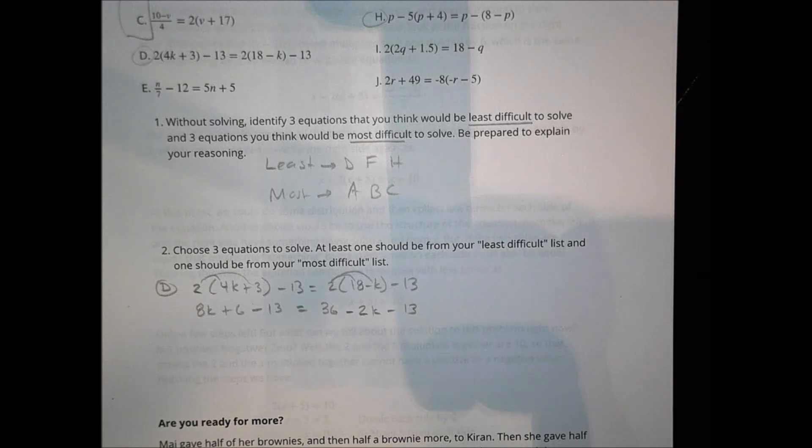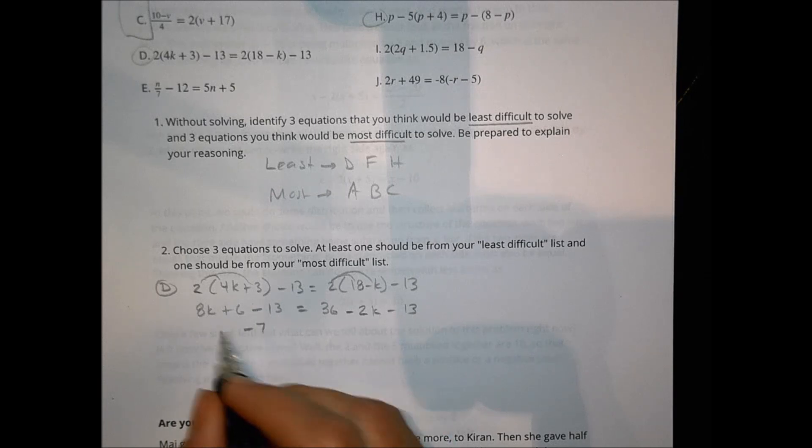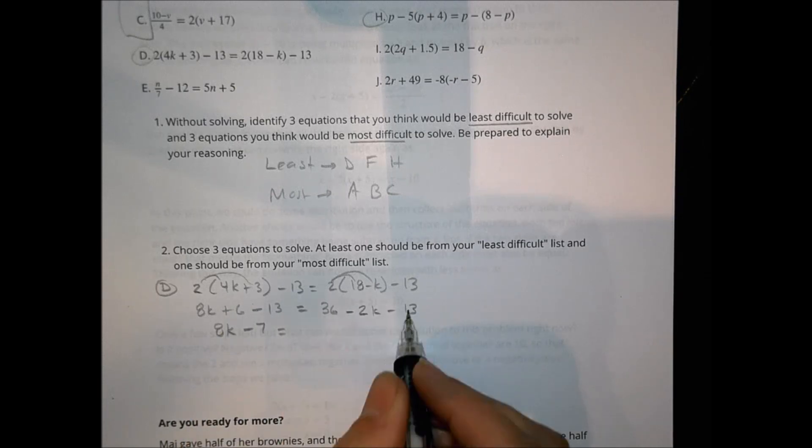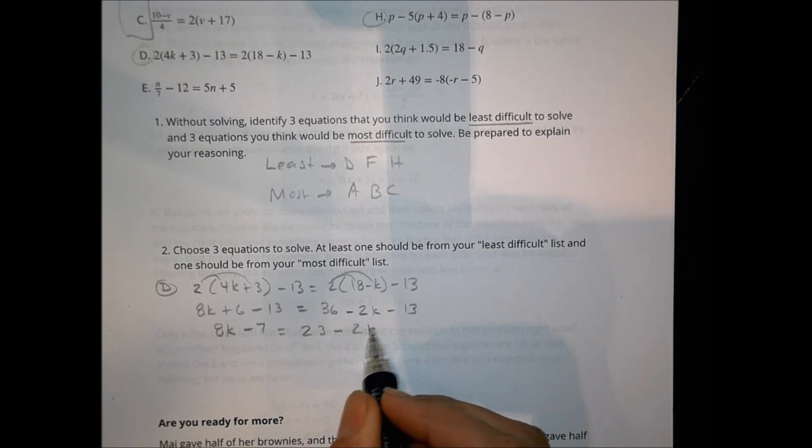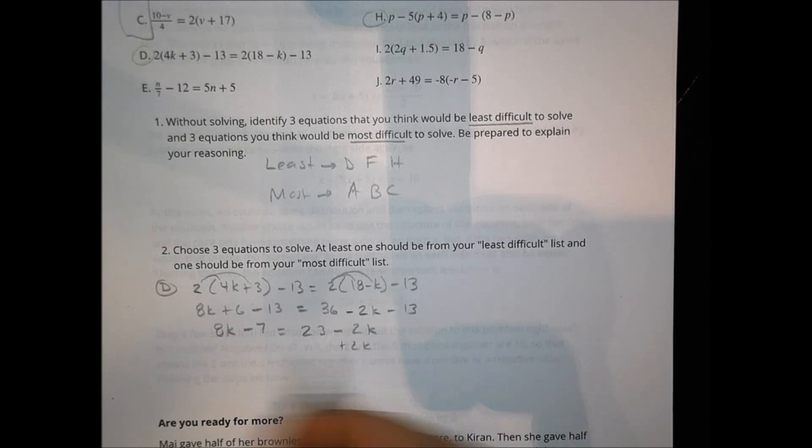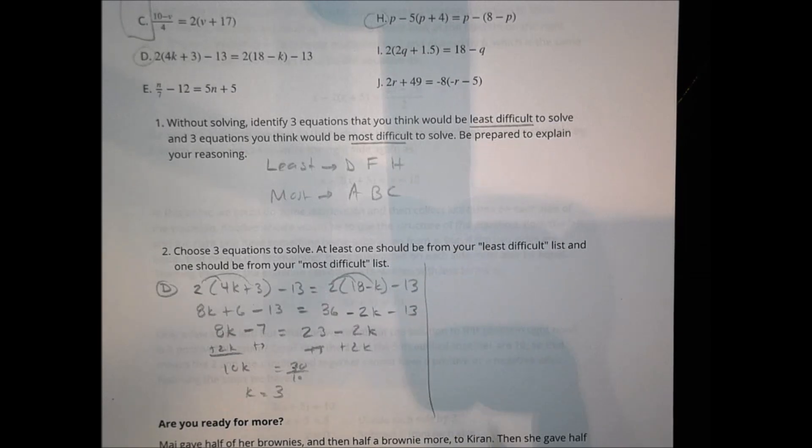So the next thing I want to do is combine my like terms. So negative 13 and a positive 6 is going to be a minus 7 altogether. The 8K stays 8K. And a 36 and a minus 13 is going to get me a 23 minus 2K there. So let's add a 2K to both sides. So we have a 10K here. And let's add a 7 to both sides. And so we have a 30 over there. Divide both sides by 10 so that K equals 30 divided by 10, which is 3. So that's a solution for letter D.